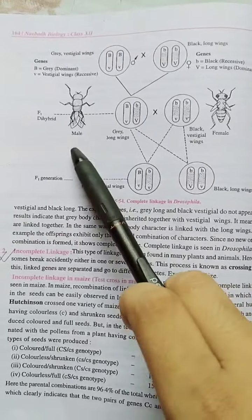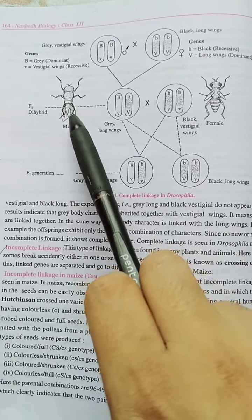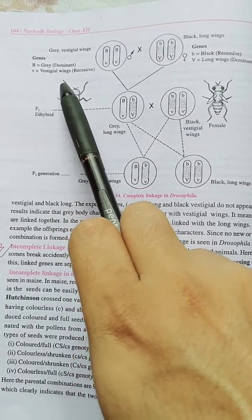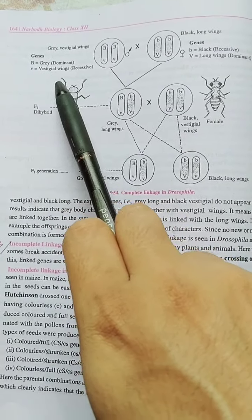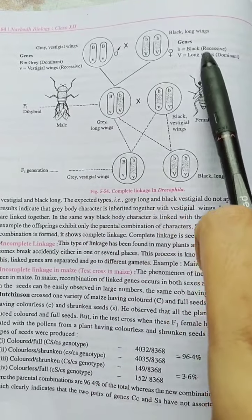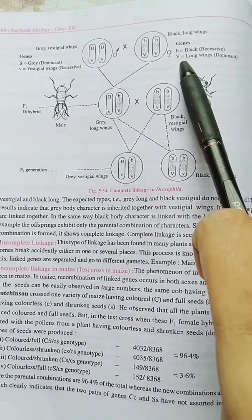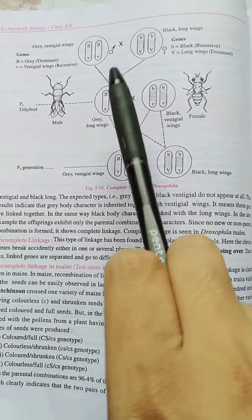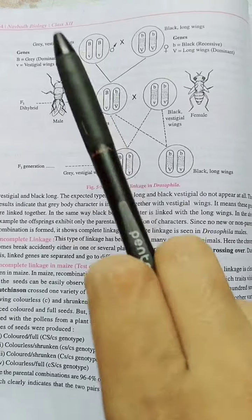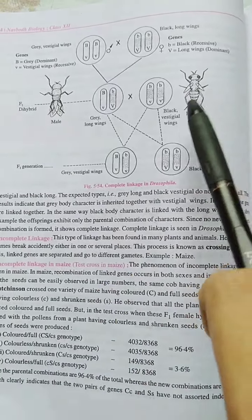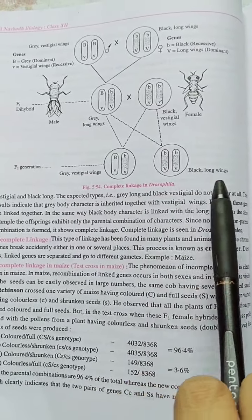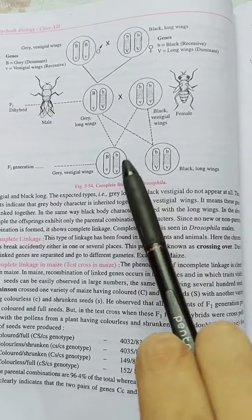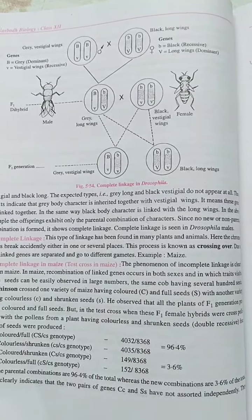We will show examples using Drosophila male and female. When capital B is coding for the grey color of Drosophila, small v is responsible for vestigial wings. On the other hand, small b is responsible for black-colored Drosophila and capital V is responsible for long wings. There is a cross between F1 dihybrid grey long-winged and black vestigial-winged Drosophila. This demonstrates a tendency toward linkage.